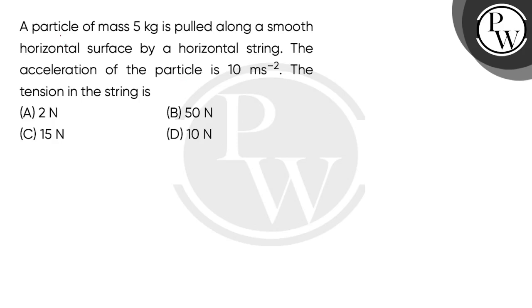So let's read the question. A particle of mass 5 kg is pulled along a smooth horizontal surface by a horizontal spring. The acceleration of the particle is 10 meter per second square.